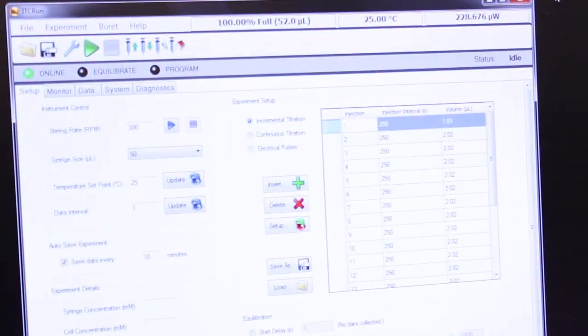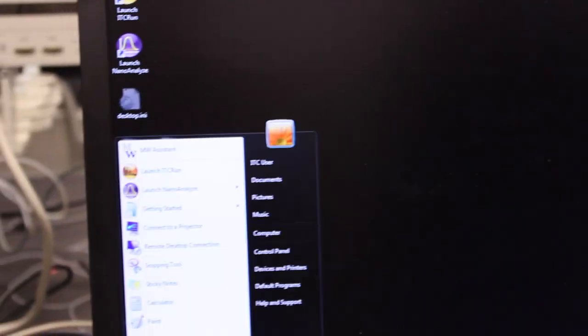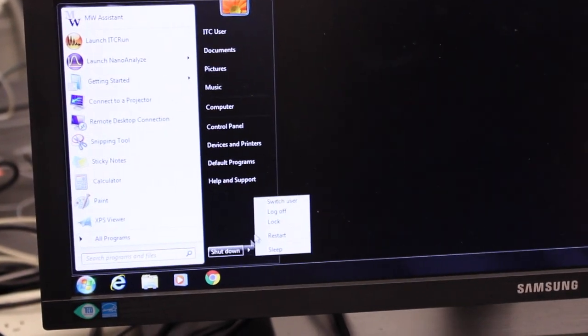First thing you should do is close the ITC run window, log out, and log in with your own account. Use your net ID and your net ID password.